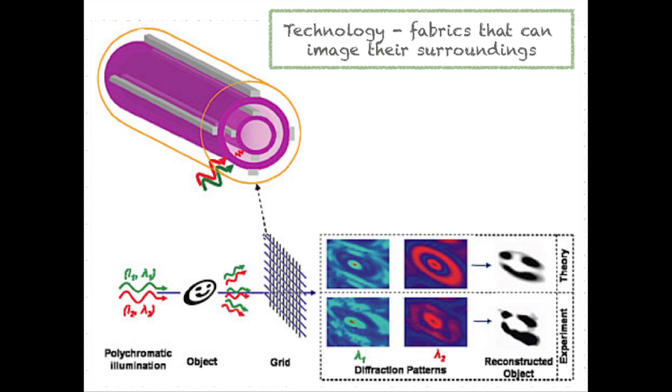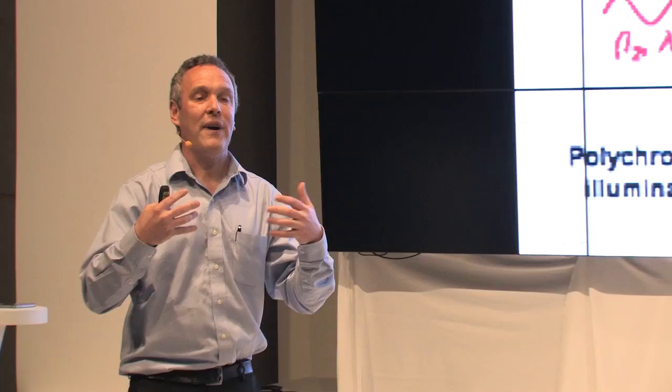And so fabrics that could image their surroundings, fabrics that operate like cameras, but are not cameras just out of a very small aperture. You're seeing actually out of your entire surface of your body is something which I think is very much in our future.